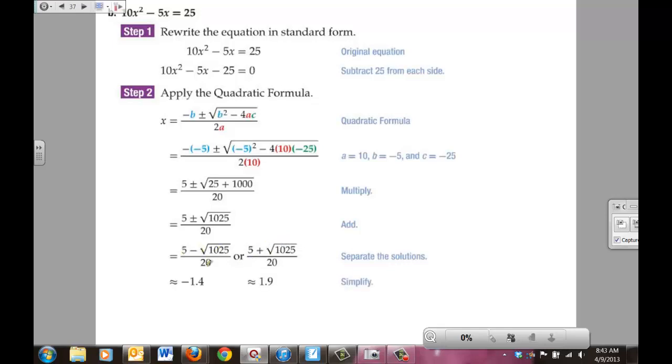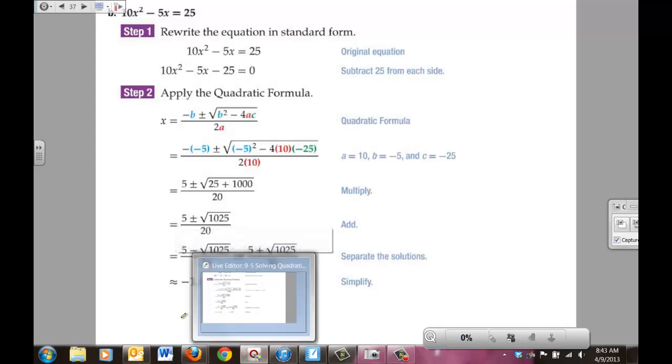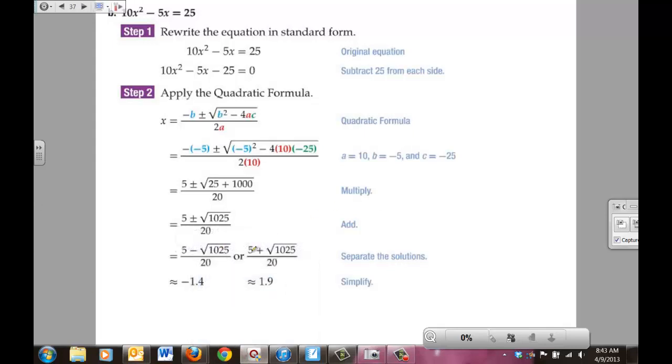From there, you could use a calculator. I'm not going to fault you for a calculator on these. 5 - √1025, which ended up being, I believe I found 31 point something when I did that, and then you took that number, divided it by 20, you got -1.4 or positive 1.9 as your two solutions, rounded to the nearest tenth. Once again, isn't it a whole lot easier to use a quadratic formula than it was to take and use that table of the tenths that we did the other day?